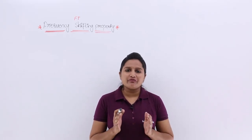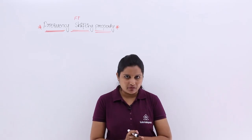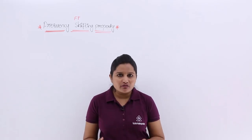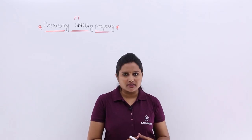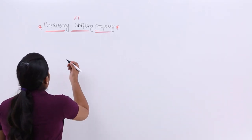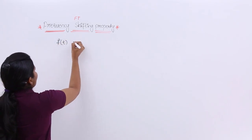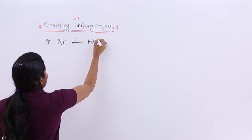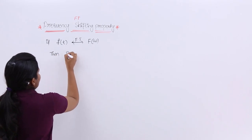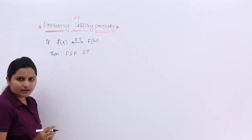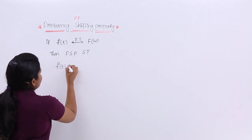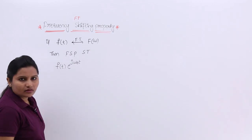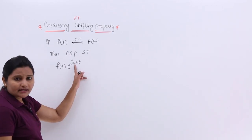In this video we are going to discuss the frequency shifting property in Fourier transforms. This property states that if you multiply any other frequency to your signal, what will be the transform of that resultant signal? For example, if f(t) has Fourier transform F(ω), then frequency shifting property states that multiplying by e^(jω₀t) means you are multiplying another frequency.